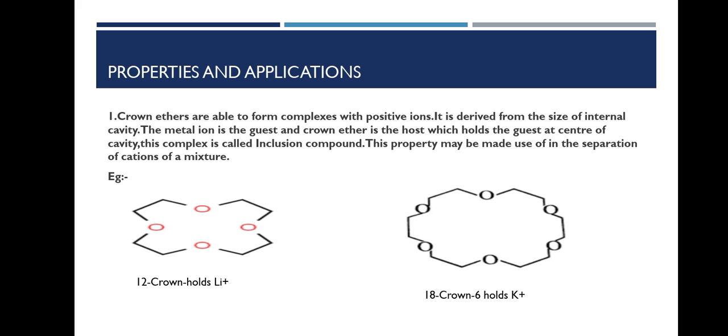Each crown can bind ions whose size is comparable with the size of the cavity. This property may be used for the separation of cations in a mixture. Examples are given: 12-crown-4 holds lithium plus ion, and 18-crown-6 holds potassium plus ions.